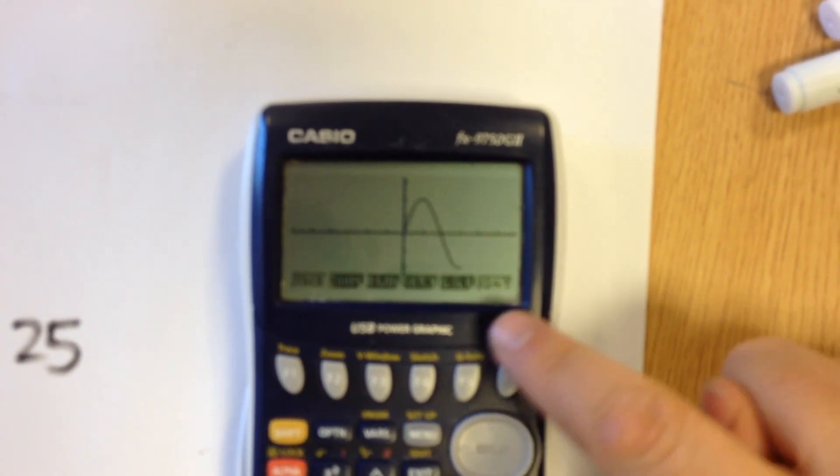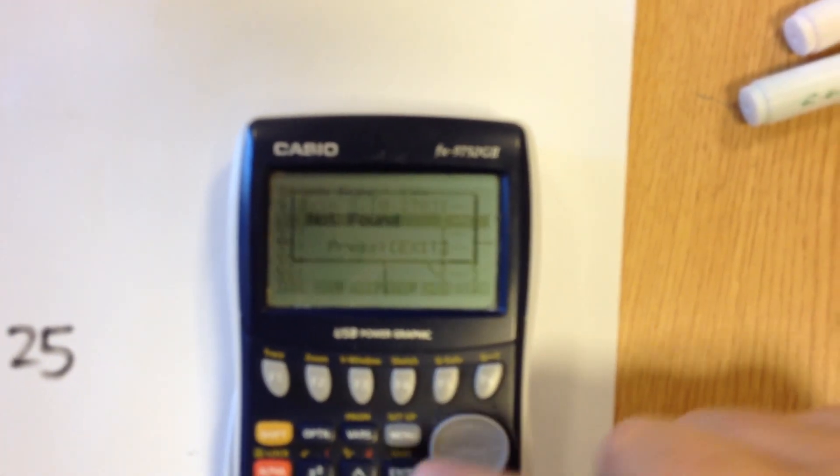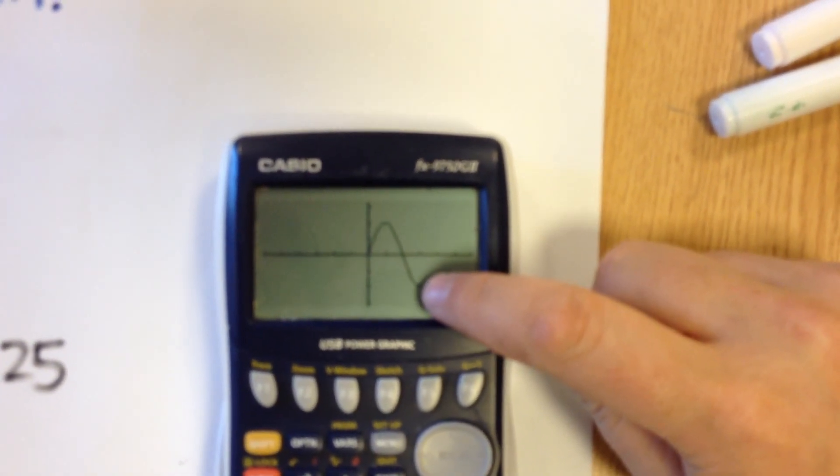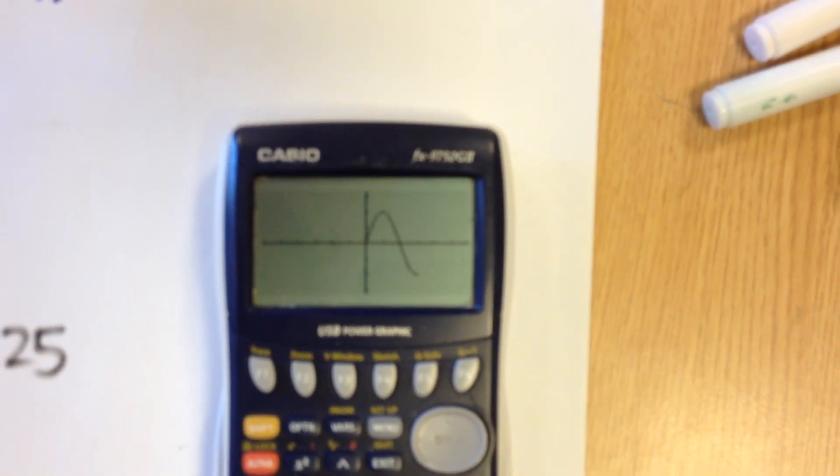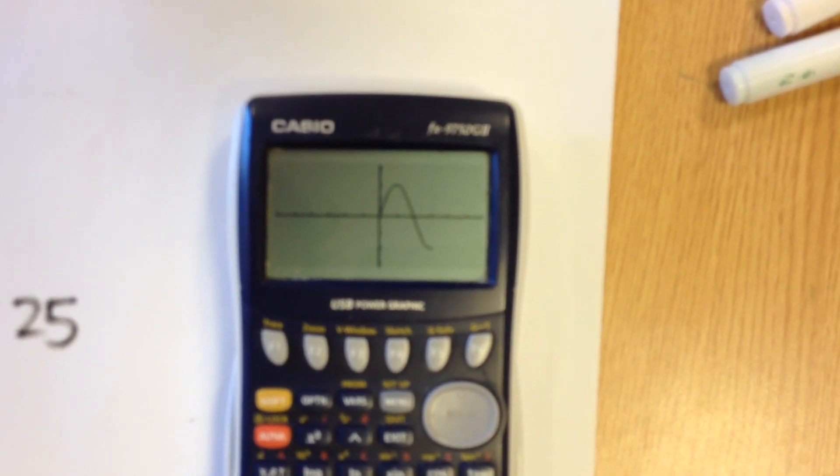So if I do g-solve add minimum, it says not found. Now the reason it's not found, sorry, is because it's right there, right at the extreme of the domain. And the calculator doesn't like finding the maximum and minimum using g-solve at those points.